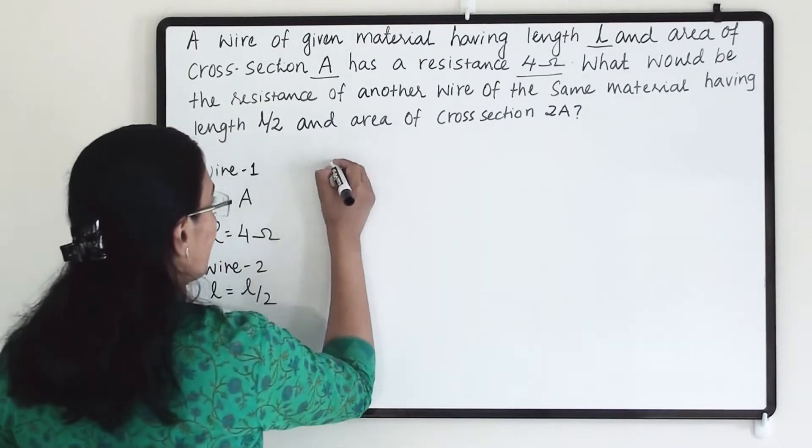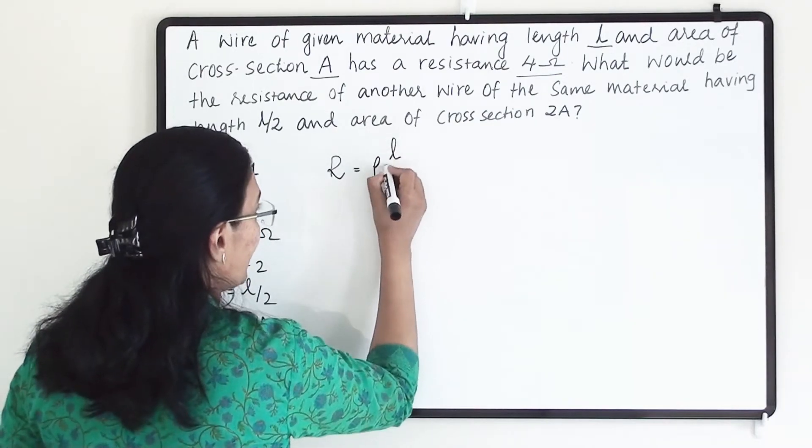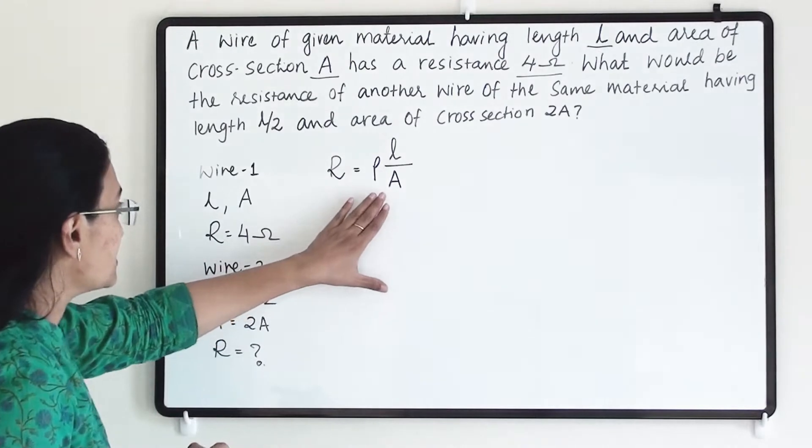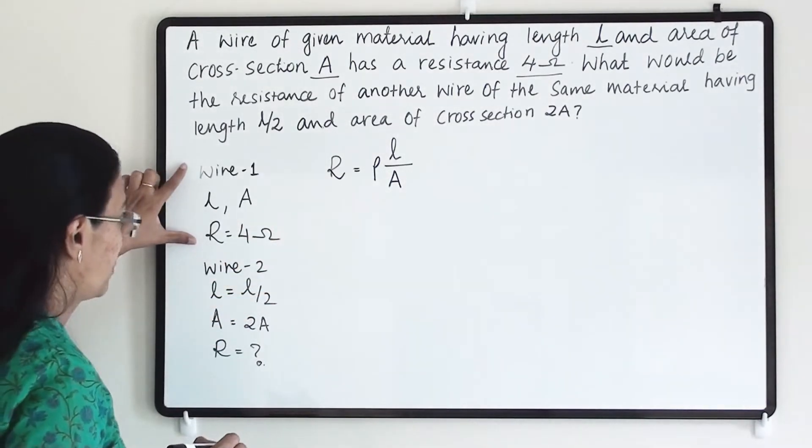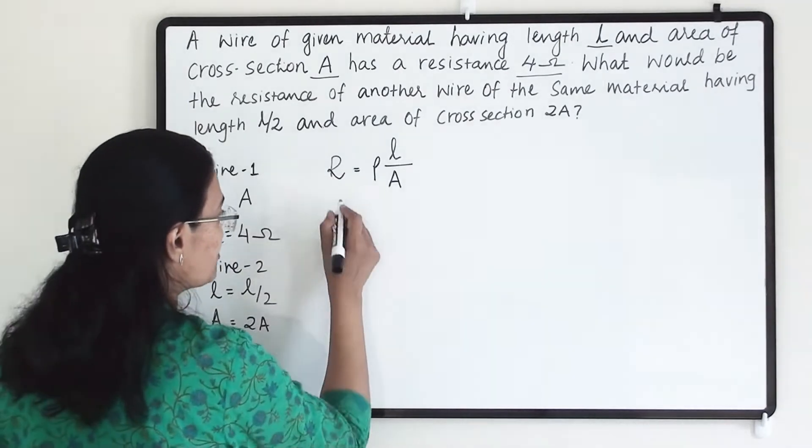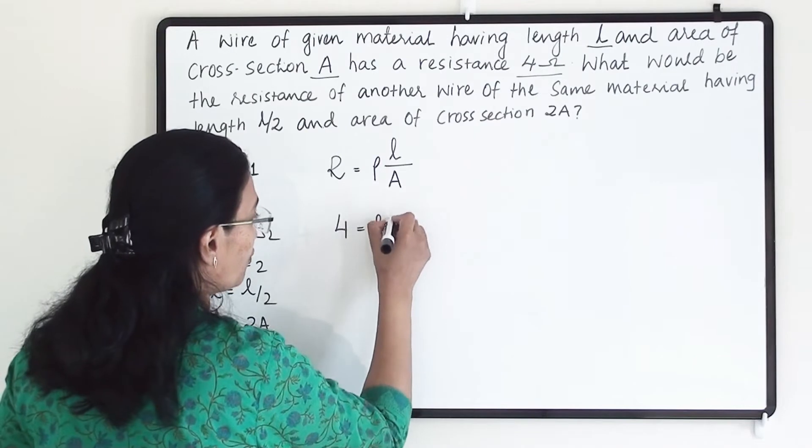Now let us write our formula: resistance equals resistivity times length divided by area. Now this situation is correct for wire 1 and here resistance is 4 ohm. So at the place of R I am writing 4. 4 equals rho L by A.